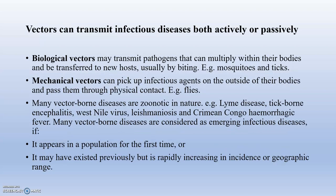Vectors can transmit infectious disease both actively and passively. Biological vectors transmit pathogens that can multiply in their bodies and transport to new hosts — examples include mosquitoes, pigs, and Phlebotomus flies. Mechanical vectors include flies. Many vector-borne diseases are zoonotic in nature: Lyme disease, tick-borne encephalitis, West Nile fever, leishmaniasis, and Crimean-Congo hemorrhagic fever.